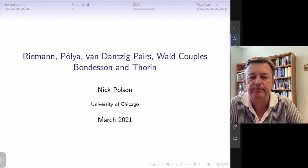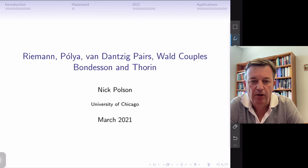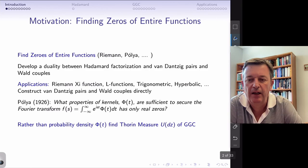Welcome to my talk on Riemann, Polya, and two other concepts: Van Danzig pairs, walled couples, and then Lennart Bondeson and Olaf Thorin for something called Generalized Gamma Convolutions. The goal here is to give some background on a set of tools and techniques for solving the Riemann hypothesis and essentially finding zeros of entire functions.